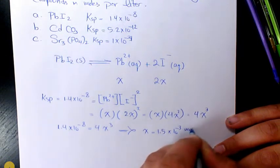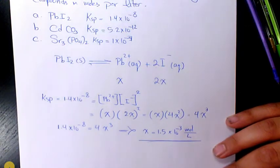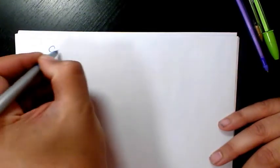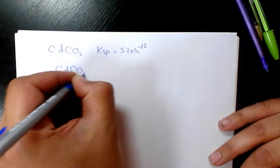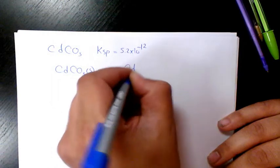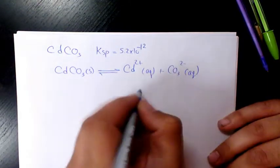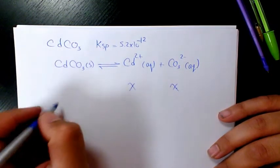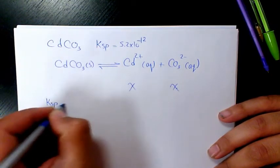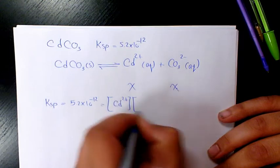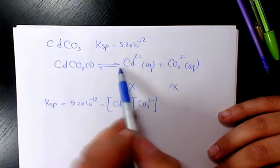Solving for X gives 1.5 times 10 to the power of negative 3 moles per liter — that's the molar solubility of lead iodide. We can do the same for cadmium carbonate, CdCO₃, with KSP of 5.2 times 10 to the power of negative 12. In solid form it produces Cd²⁺ in aqueous phase plus CO₃²⁻ in aqueous phase, each with concentration X. KSP equals 5.2 times 10 to the power of negative 12, equal to the concentration of cadmium ion times concentration of carbonate, each to the power of 1 because the coefficient is 1.